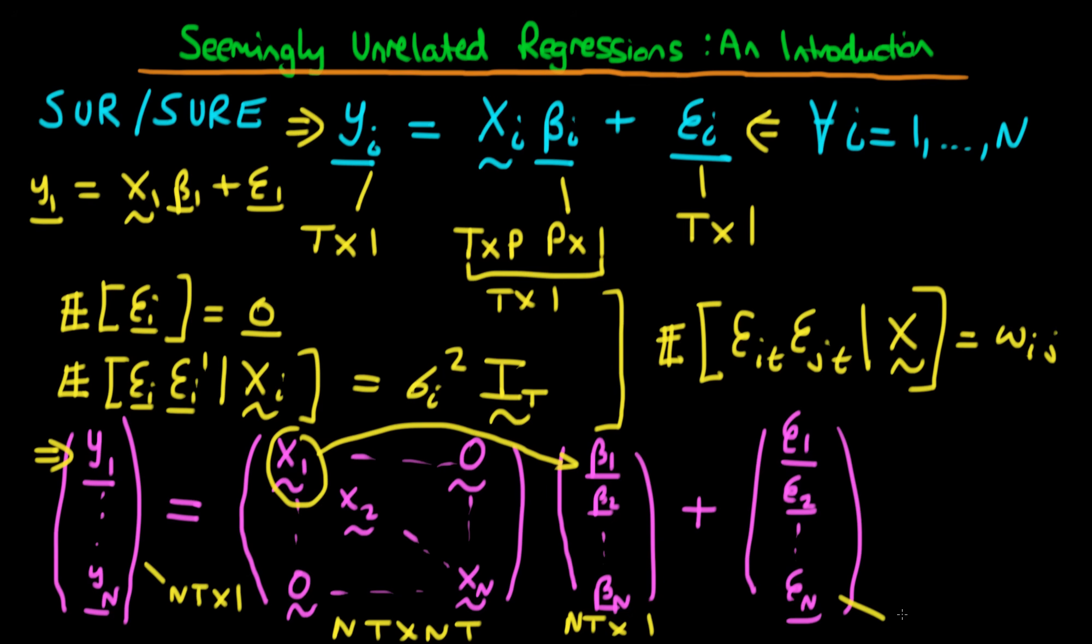And then finally, the error vector here has the same dimensions as the dependent variable vector. It's just NT by 1. So it's not difficult to see how by stacking each of the observations on top of one another and forming a particular matrix which is filled with the matrices of the independent variables, we can actually represent our system of equations for each individual in terms of a single matrix equation. And we're going to continue our discussion of this particular type of situation in the next video. Thank you.